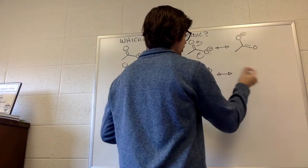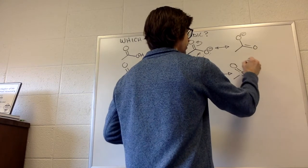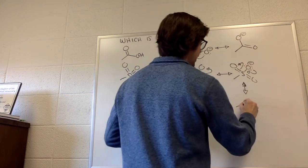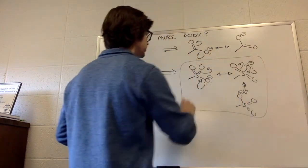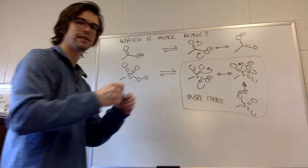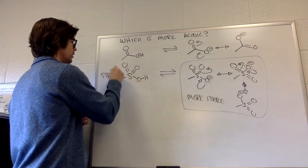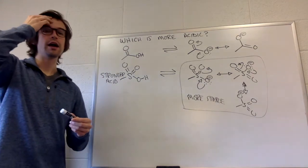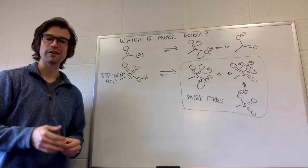We can move that down and that up. So, the sulfonic acid conjugate base is even more stable than the carboxylic acid conjugate base because it has extra delocalization. That means that this is the stronger acid, this is the stronger of the two of these. And it turns out that these sulfonic acids are really acidic.